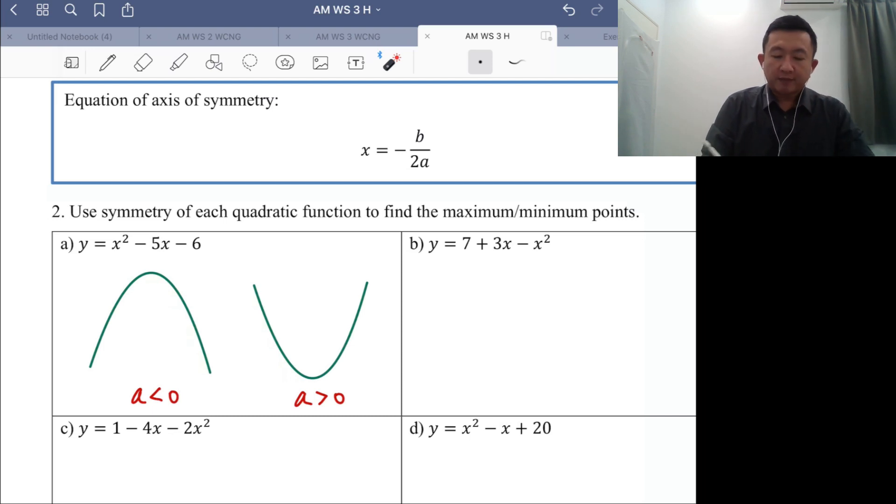First we must know that for all quadratic functions there are only two kinds of shapes. It could be the n-shape or u-shape depending on the value of a. If your a value is more than 0, positive, it will be a u-shape. If your a is a negative value it will be n-shape.